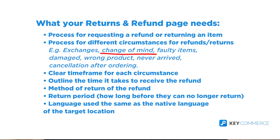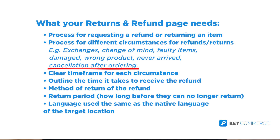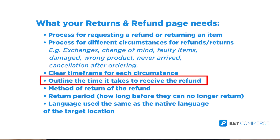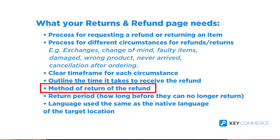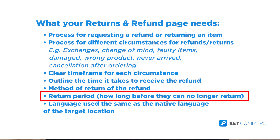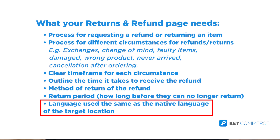Do you offer exchanges, change of mind, faulty item returns, or refunds? What about damaged products, wrong products, products that never arrive, or customer cancellations after ordering? Include timeframes for each of these circumstances. Clearly outline the time it takes to receive the refund and the method — is it to the same payment method or store credit? Also make sure what the return period is, and that your returns and refunds page is in the language of your target customers. Very importantly, link to the refunds and returns policy page on your product pages and in your footer.